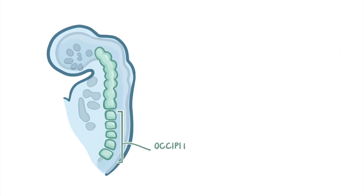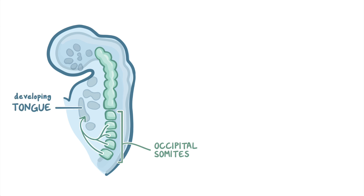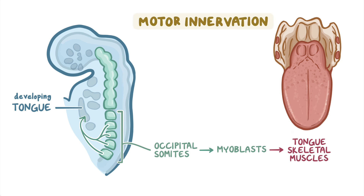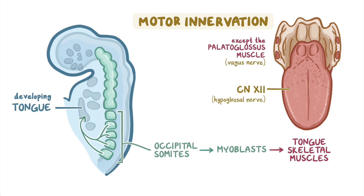As the lingual swellings are developing, the occipital somites that come from the paraxial mesoderm migrate into the developing tongue. The occipital somites give rise to myoblasts, which go on to develop into the tongue's skeletal muscles. The motor innervation of tongue muscles comes from the twelfth cranial nerve, the hypoglossal nerve, except for the palatoglossus muscle.